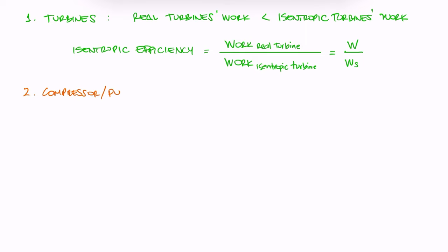In the case of a compressor or a pump, we know that the work of an isentropic compressor or pump is the very minimum idealized value, and that a real compressor or pump would require more work than that.